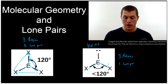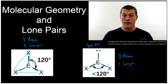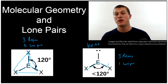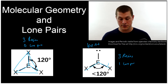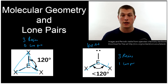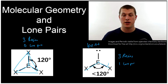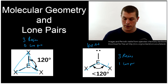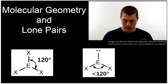What we're going to do is build up a chart that looks at all the different combinations of the number of lone pairs and the number of regions of electron density. This can be a lot to learn, so it's important to try to understand why each shape is named the way it is — that helps you remember the different shapes.